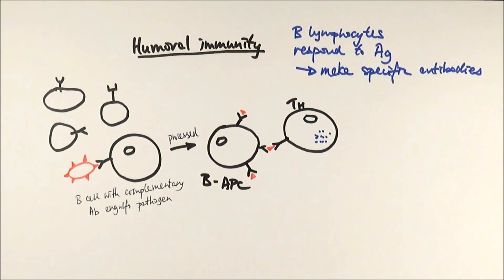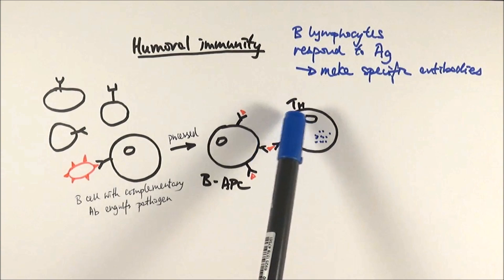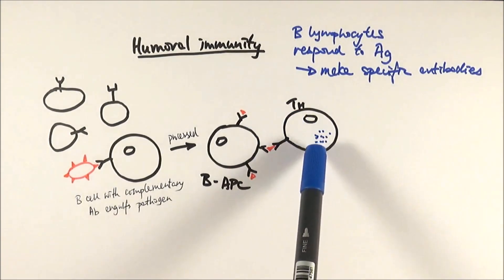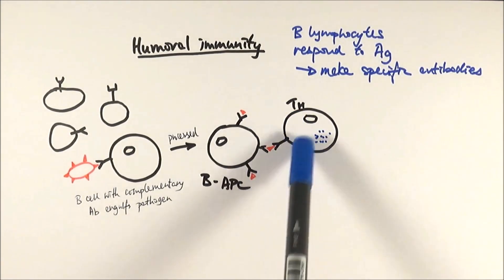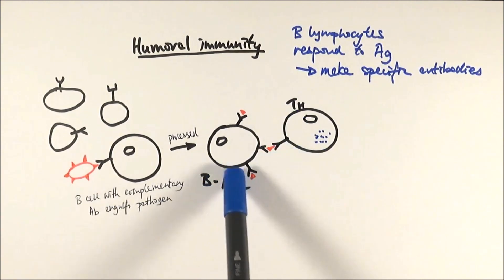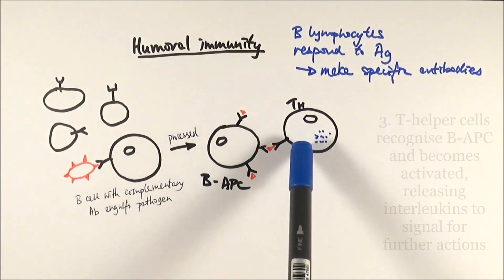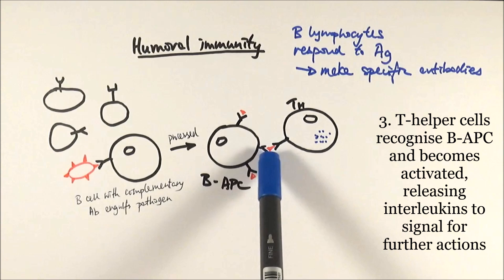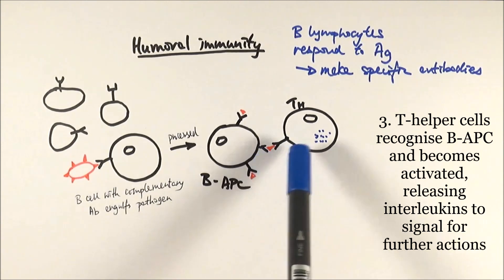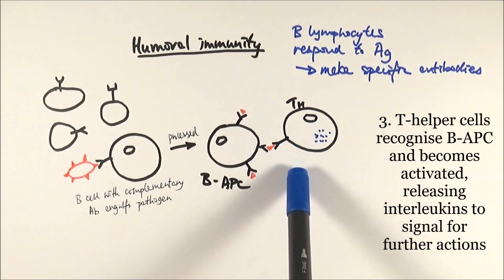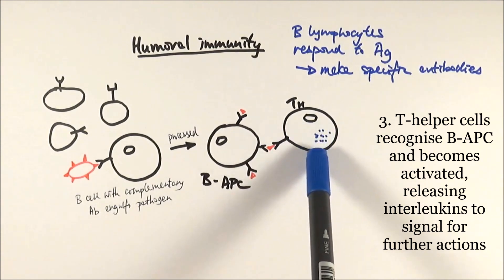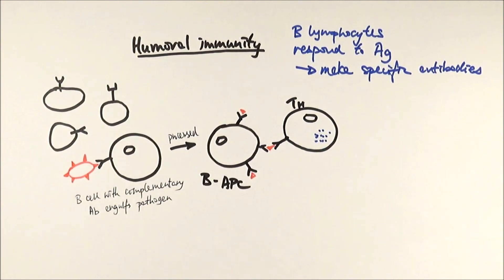And so this is where humoral immunity and cell mediated immunity can sort of link. As we mentioned before, T helper cells, T cells in general, can only respond to altered cells. So in this case it's responding to a B antigen presenting cell. Its receptors can recognize the antigen complex here and then it becomes activated. Once it's activated it will release the interleukins which then signal the cells to do different things.